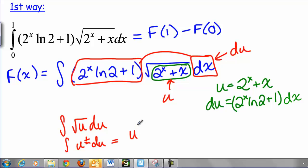So the antiderivative of that is u to the 3/2 over 3/2 plus C. Going back to X's we get 2/3 quantity of 2 to the X plus X to the 3/2 plus C. So this is our general antiderivative.